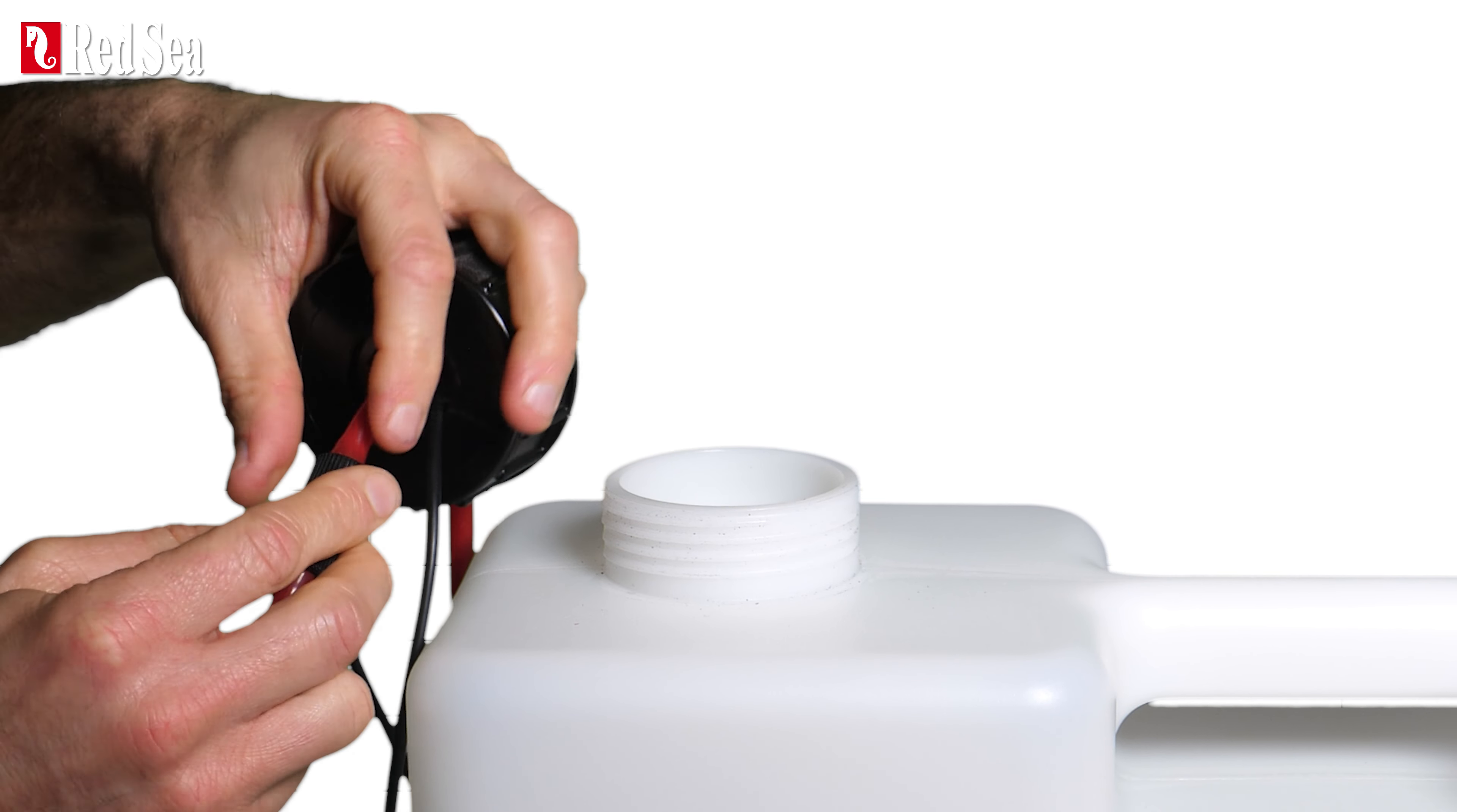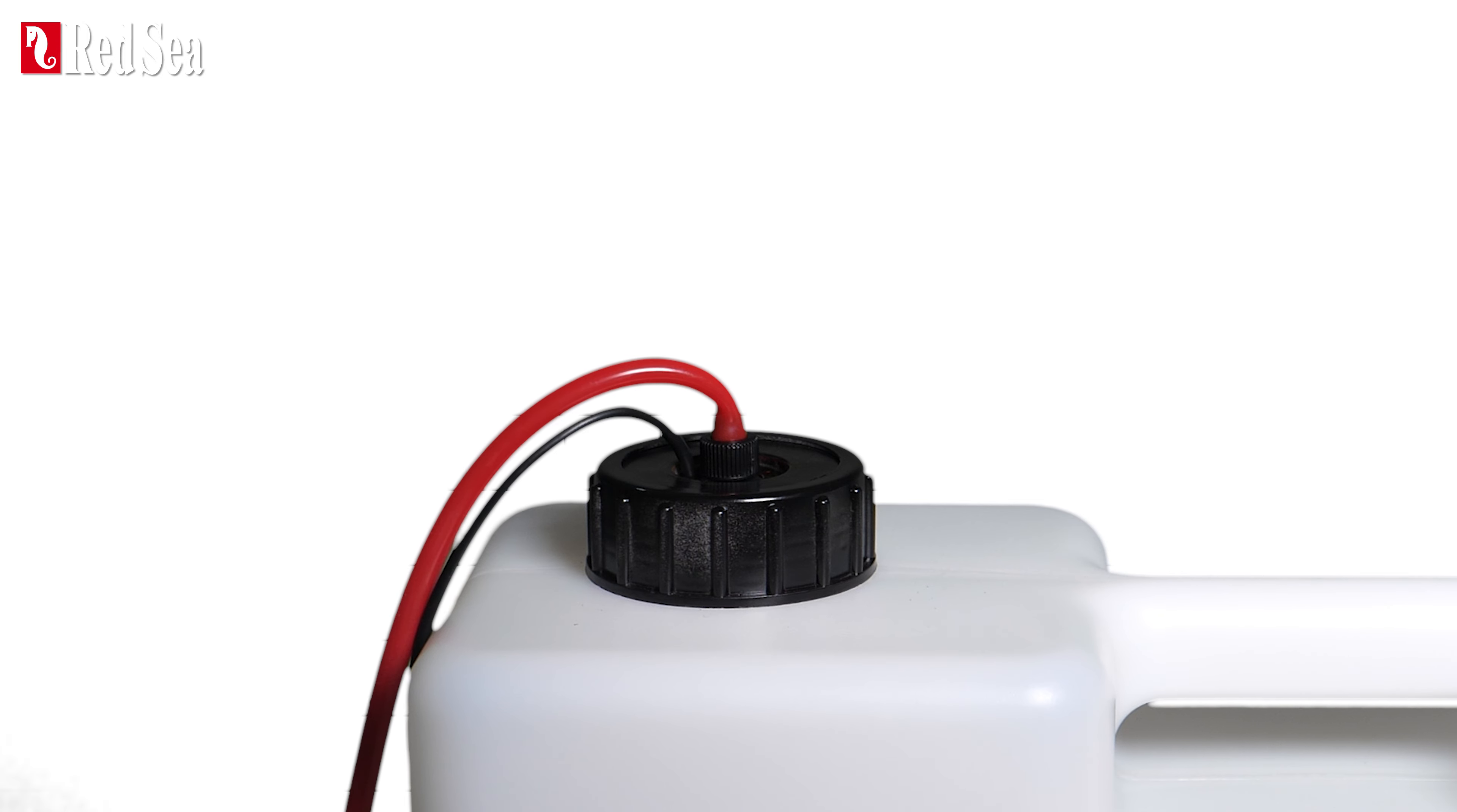And if you have a different brand of ATO, you can simply leave the back opening uncovered, allowing the power cables and tubing to extend freely. Your ATO pump is now ready for action.